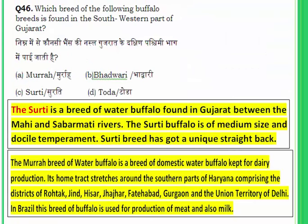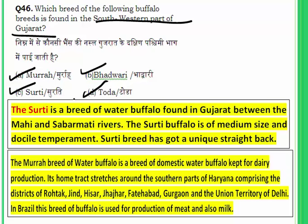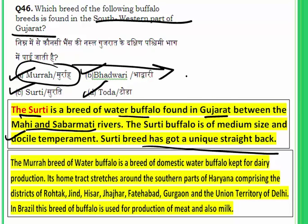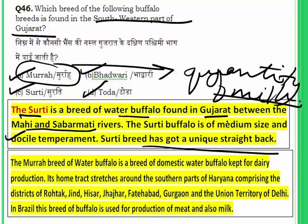Question 46: which breed of buffalo is found in the south-western part of Gujarat? Options are Murra, Bhadawari, Surti, and Toda. The answer is Surti. The Surti is a breed of water buffalo found in Gujarat between the Mahi and Sabarmati rivers. It has a unique straight back and is of medium size with a docile temperament. The Murra buffalo is known for its high quantity of milk; a world record was created in 2016 by a Murra buffalo named Rani from Punjab.